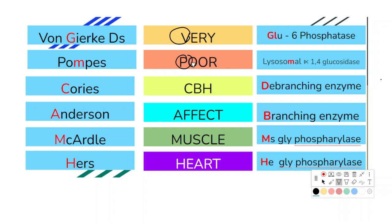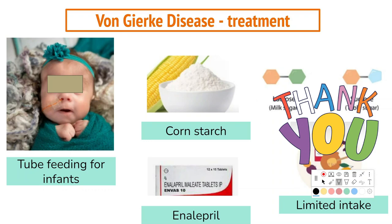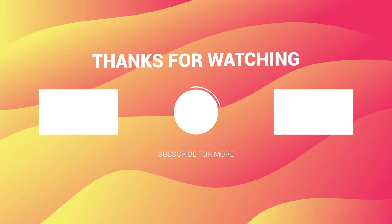A simple slide to remember: GSD — 1 is Von Gierke, 2 is Pompe (affects muscle and heart), 3 is Cori, 4 is Anderson, M is for muscle, H is for heart. We can also remember the enzymes: type 1 (Von Gierke) has G for glucose-6-phosphatase; Pompe has M for lysosomal alpha-1,4-glucosidase; Cori's has debranching enzyme; Anderson has branching enzyme; M is for McArdle's muscle glycogen phosphorylase; and H is for heart glycogen phosphorylase. That's all about today's video — I hope you all understood and learned well. Please let me know what other topics you'd like to learn. Till then, take care, study hard, study smart, bye!